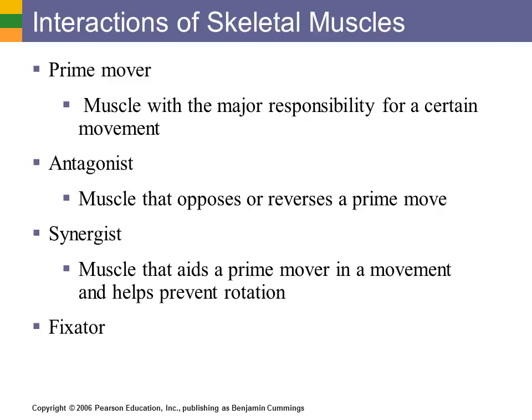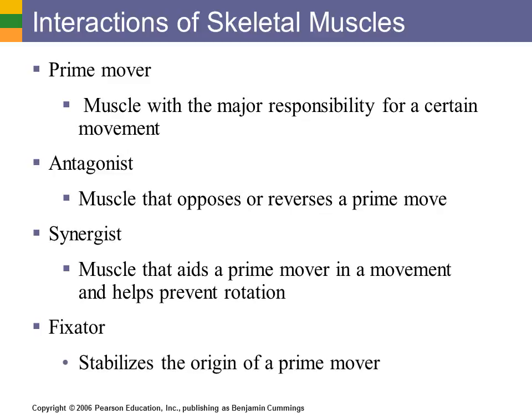Fixator muscles are those muscles that stabilize the motions. If you're doing a bicep curl, you have all kinds of muscles that stabilize it — your deltoid, your pectoralis major, your latissimus dorsi on the back. These muscles hold the joint in place, preventing unnecessary movements so you can isolate just flexing the arm.